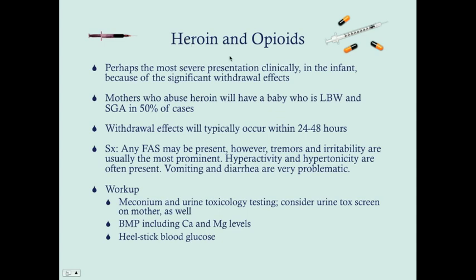Starting with heroin and opioids — which include buprenorphine, codeine, Vicodin, Dilaudid, morphine, and Percocet — heroin tends to cause the most severe presentation of neonatal abstinence syndrome due to significant withdrawal effects. In half of cases, mothers who abuse heroin will have a low birth weight or small-for-gestational-age baby. Withdrawal effects happen quickly, within the first day or two of life.